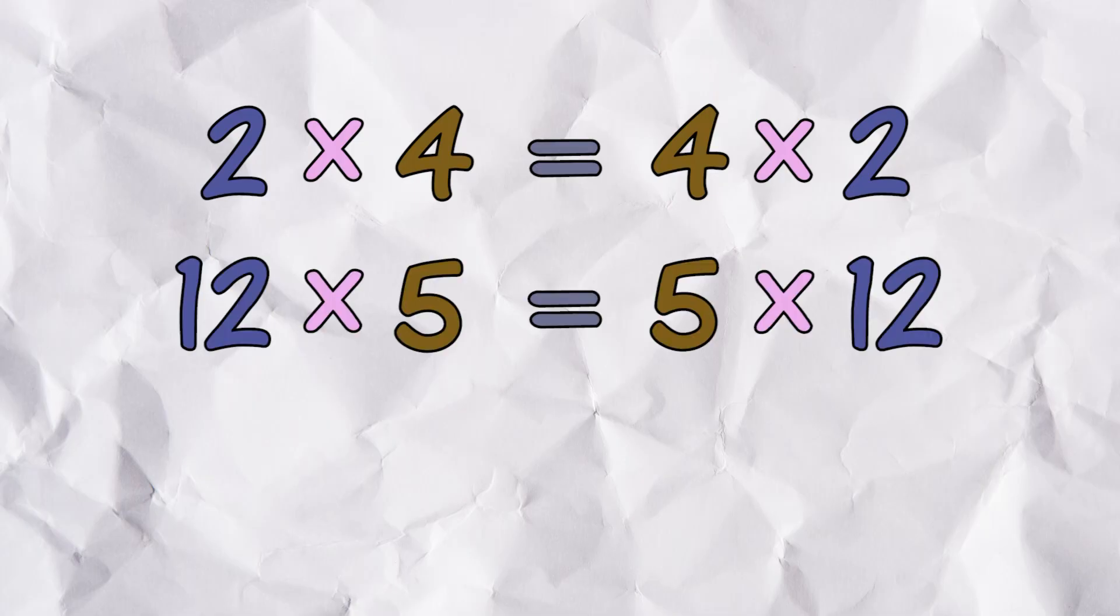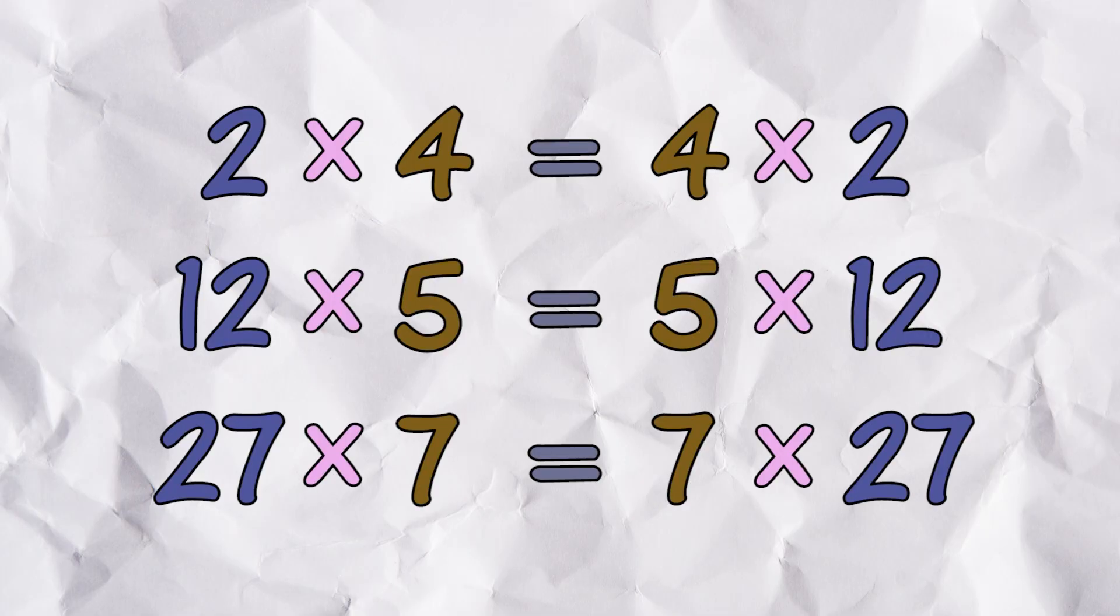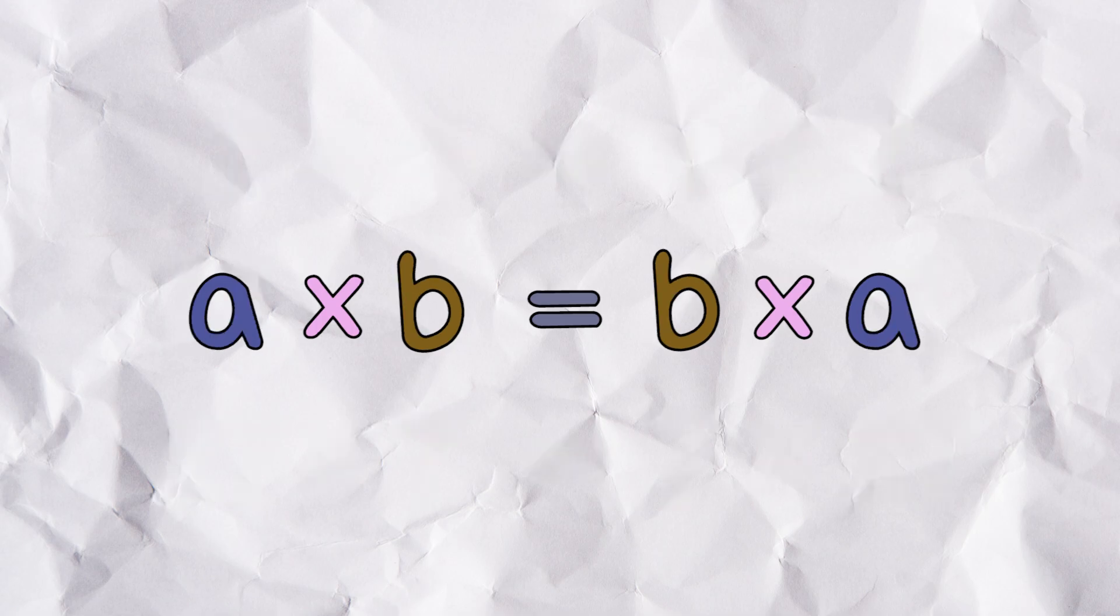It also works for other numbers. So we get this law: a times b equals b times a.